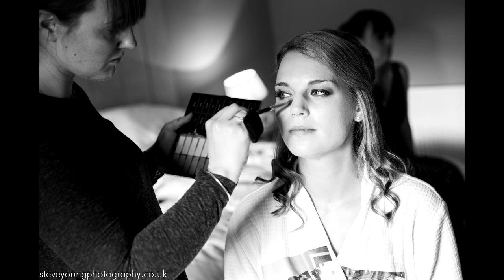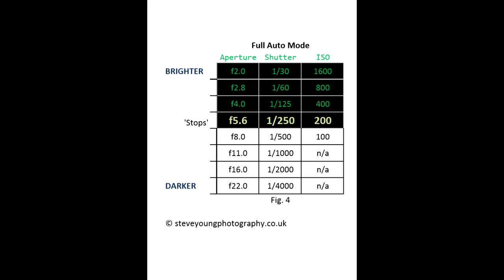Shooting outdoors in good light is much less challenging. When we have a lot of light to work with, the camera will tend to automatically give us a nice fast shutter speed and a nice low ISO number. So when I'm shooting a wedding, I very rarely need to go to manual mode in an outdoor lighting situation. I'll illustrate that with a couple of photos.